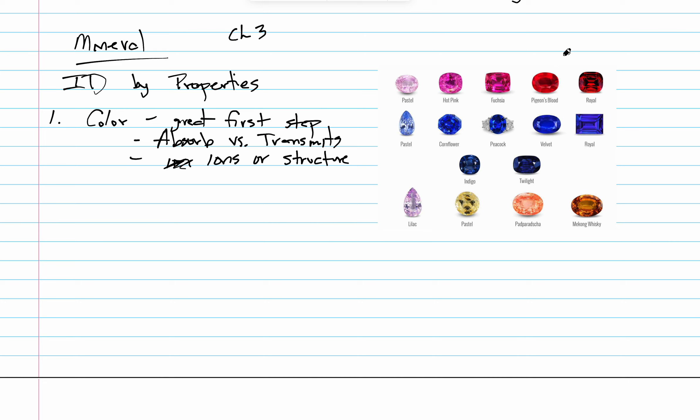For example, this is corundum, which can either be red ruby or blue sapphire, but it can actually be a lot of other colors too, depending on if the chromophore, which is an ion, is chrome or titanium or magnesium or iron. Chromium, for example, would be giving us this beautiful red color.